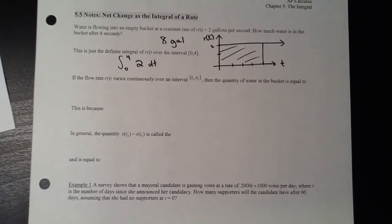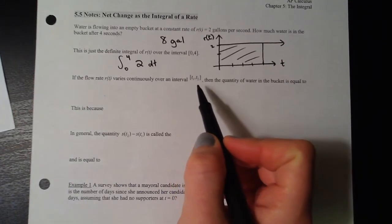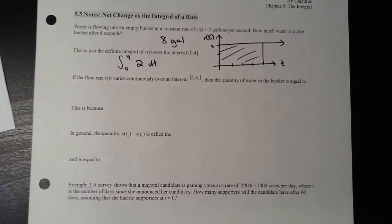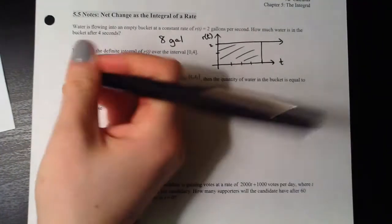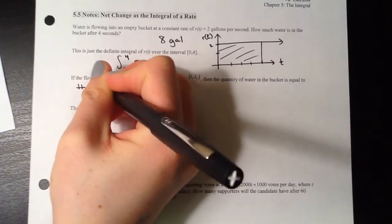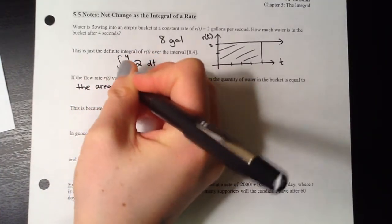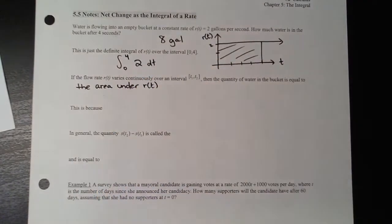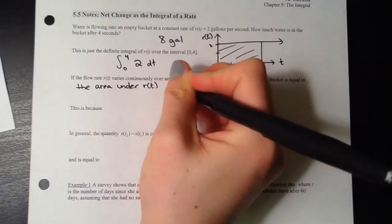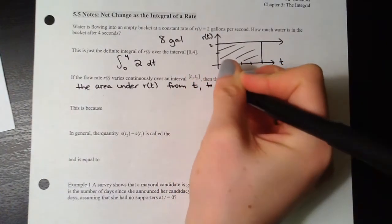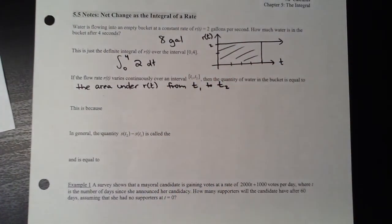Now let's say the flow rate varies continuously — an up-and-down function, not constant. Going from an interval t1 to t2, in generic form, the quantity of water is equal to the area under r(t) from t1 to t2. If you're trying to figure out the total amount of water, you integrate the rate function from t1 to t2.